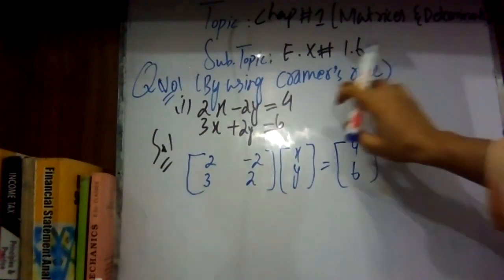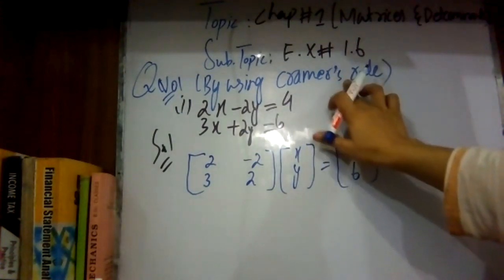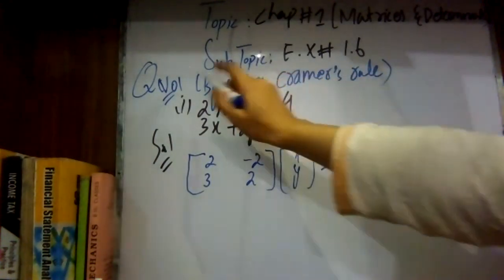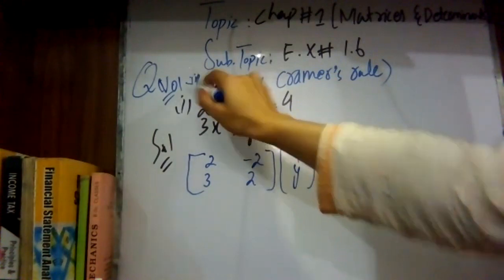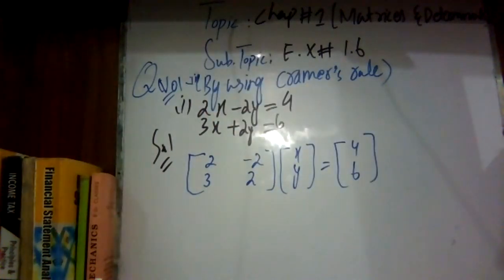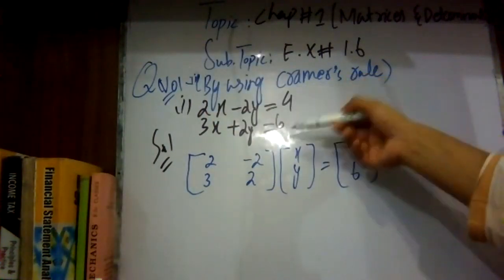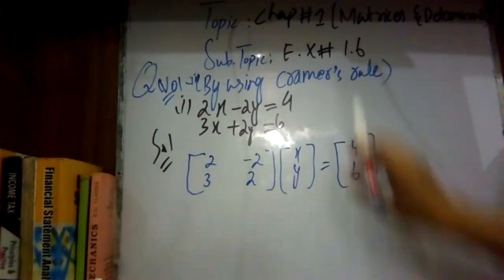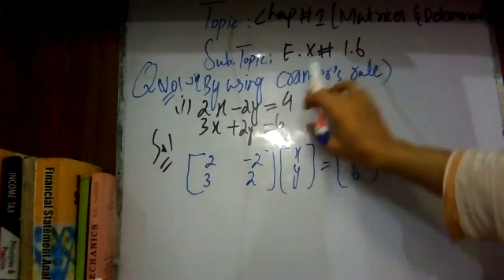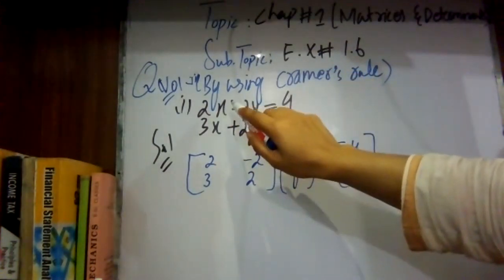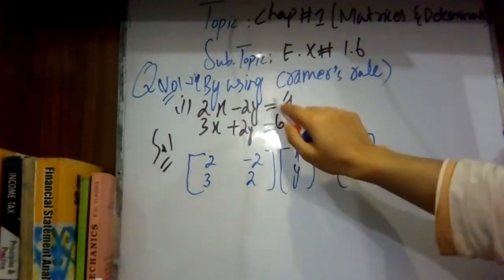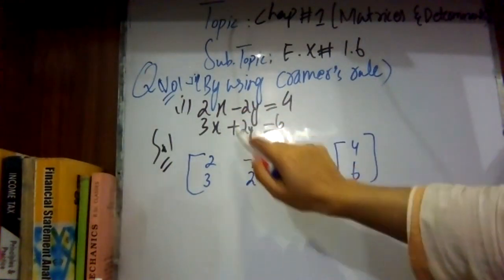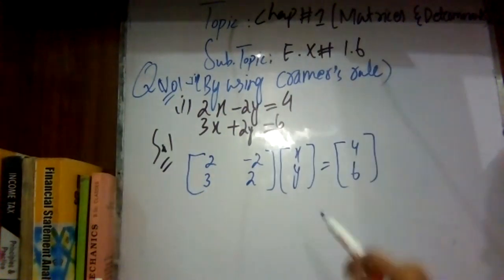In question number one, we are asked to solve using two methods — Cramer's Rule and the inversion method. Today we prefer to learn Cramer's Rule first. In part one, the first linear equation given is 2x minus 2y equals 4, and the second linear equation is 3x plus 2y equals 6.